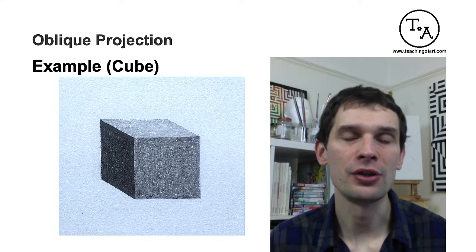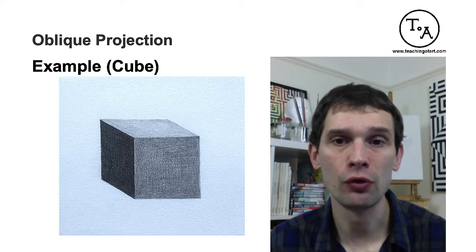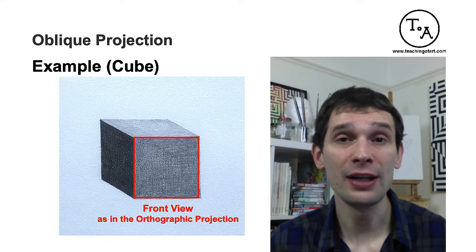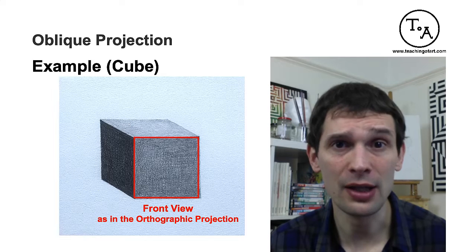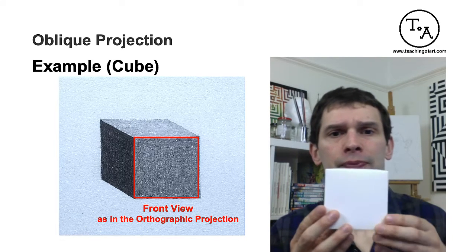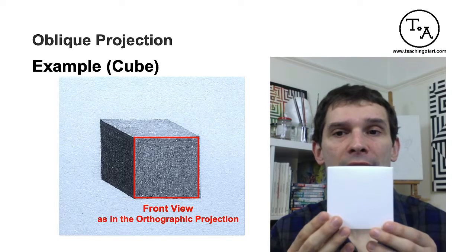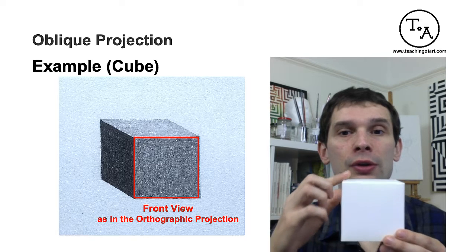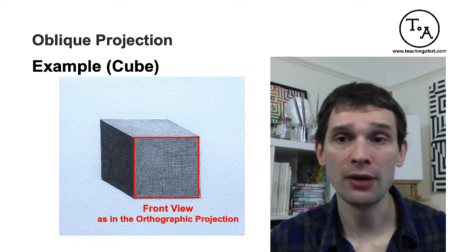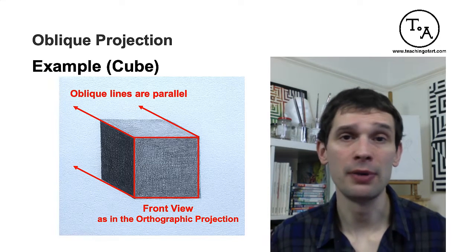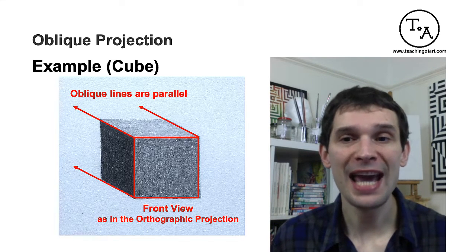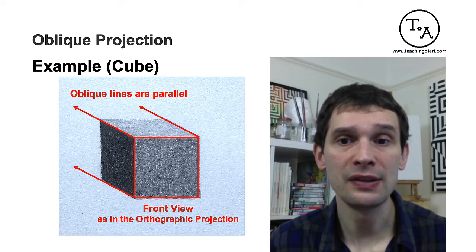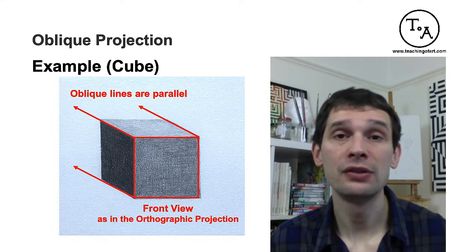When you do elevation oblique projection, there are two main principles. The first principle is that you draw the whole front side as it would appear in the front view — as if you were directly facing it. In the case of a cube, we've established that the front view is a square, so you would firstly draw a square. The second principle is that when you create depth by drawing the oblique edges, these edges are parallel to each other. You choose an angle — for example 30, 45, or 60 degrees — and then draw the edges as parallel lines. By doing so you're creating depth, but it does not look photorealistic because the oblique lines are parallel. That is the reason why it's called a parallel projection.